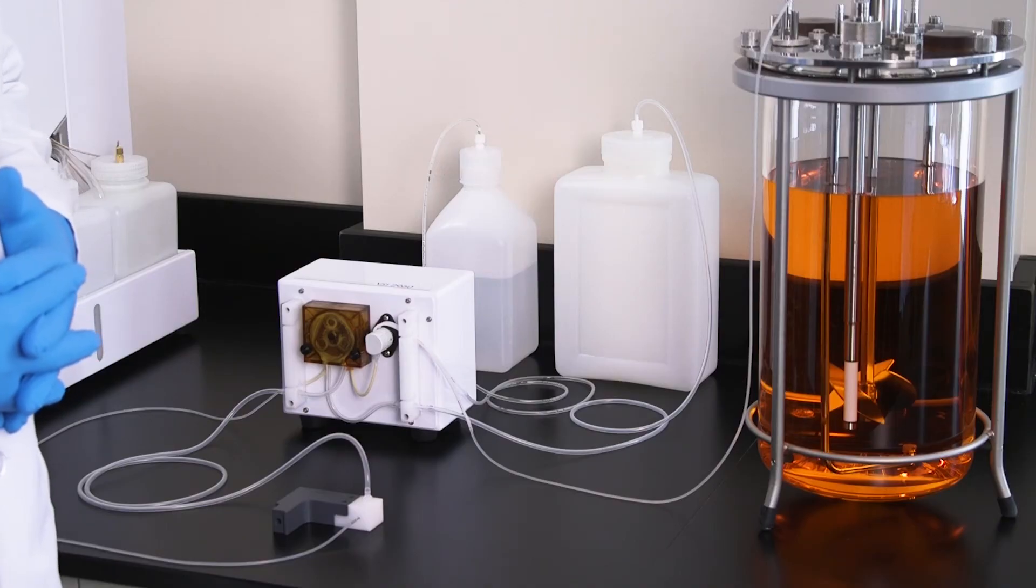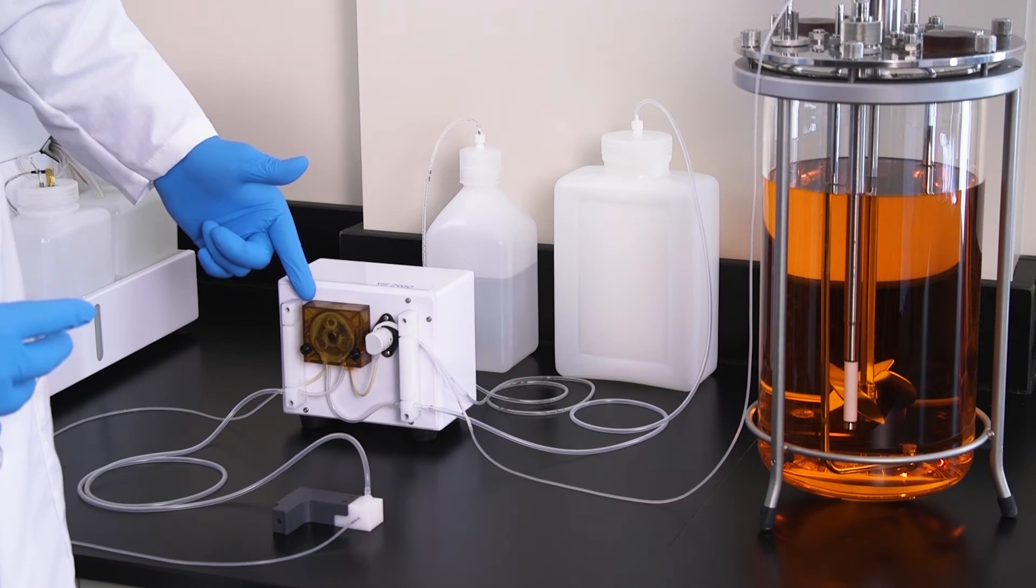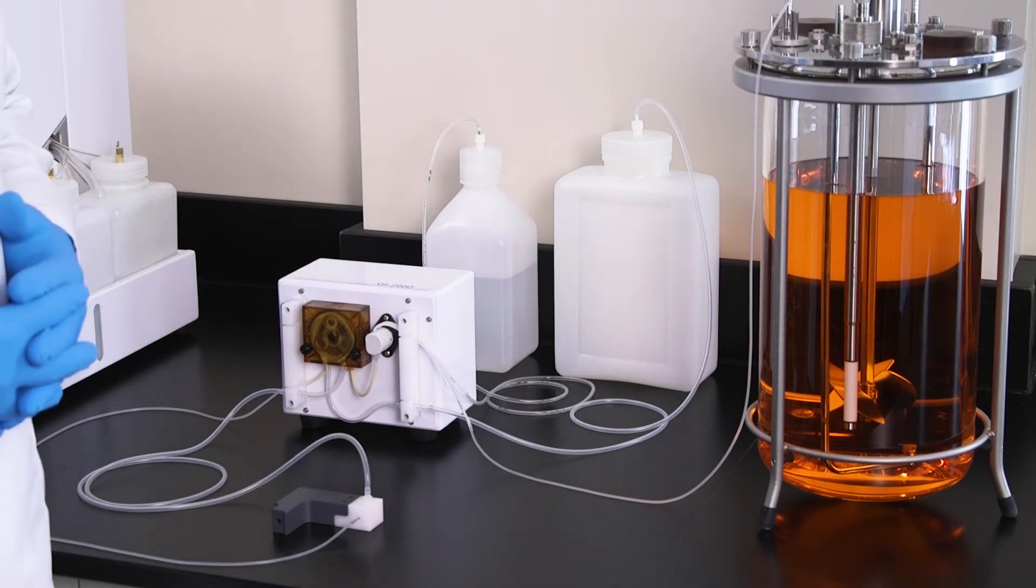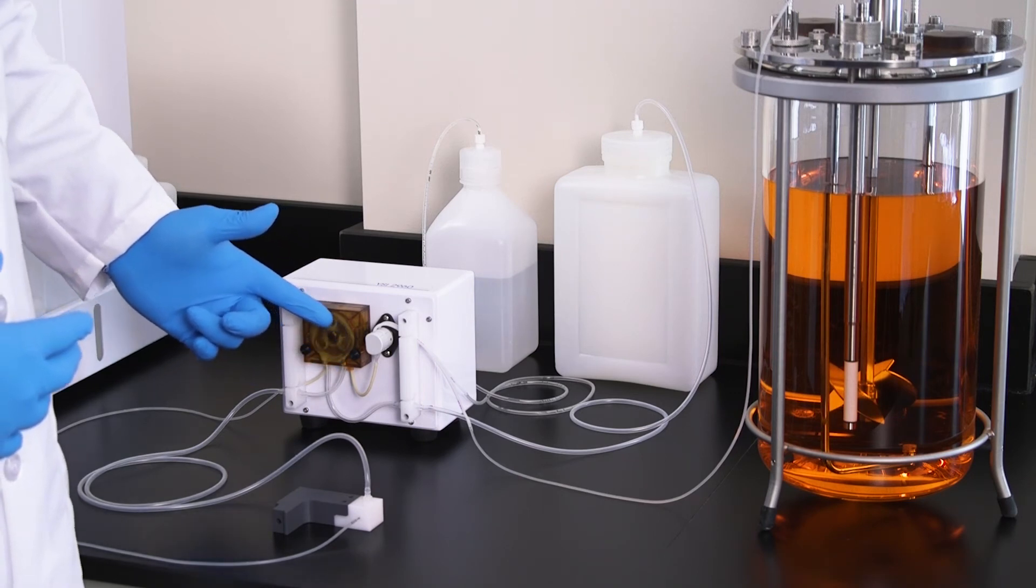Once the pinch valve tubing is configured, we will proceed to the amber-colored peristaltic pump head. As this is a unidirectional pump, you will want to ensure that the tubing is fed into the right side of the pump head.